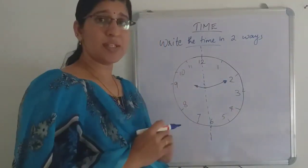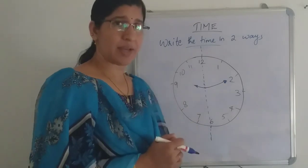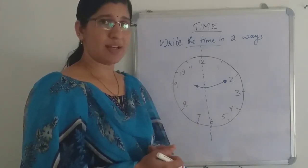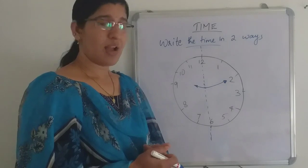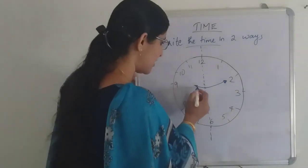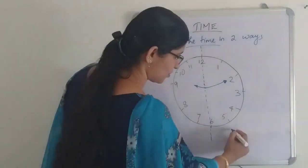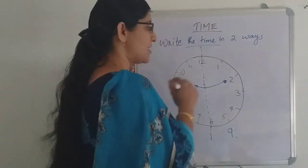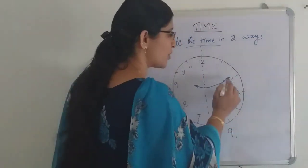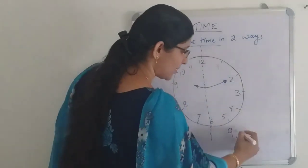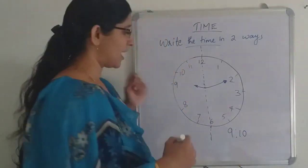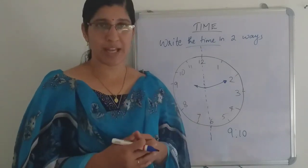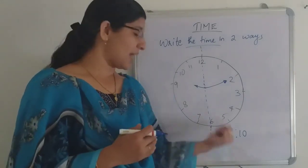Please say the time — the short hand is up to nine, so nine. The minute hand leads to two, so two into five is ten. The time is nine ten. This is the first method of saying the time.